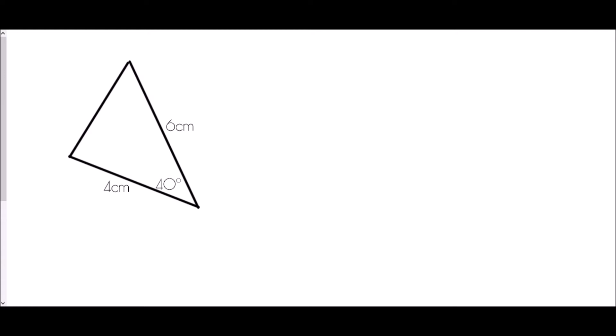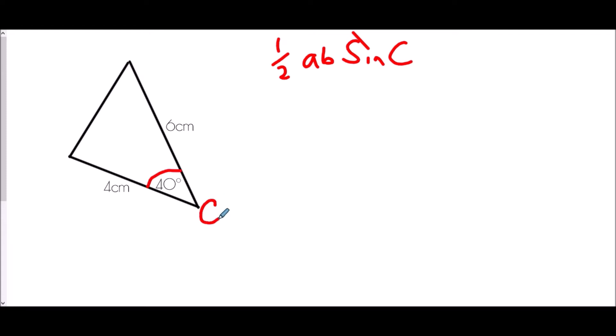Okay, so let's try this out with the example we can see here. We have a side of four centimetres, a side of six centimetres, and an angle of 40 degrees. The formula we're going to use throughout is that the area equals a half AB sine C, but we just need to make sure that the angle we know is the angle we're going to label as C.